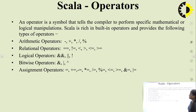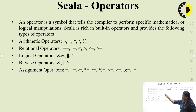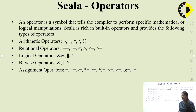Next is Scala operators. An operator is a symbol that tells the compiler to perform specific mathematical or logical manipulation. Scala is rich in built-in operators and provides the following types: arithmetic operators (plus, minus, multiply, divide, mod), relational operators (==, !=, >, <), logical operators (AND, OR), bitwise operators, and assignment operators.